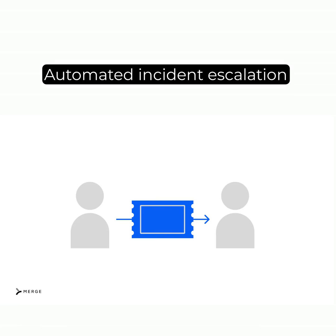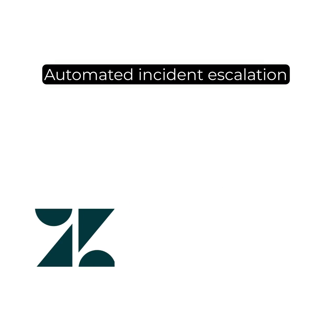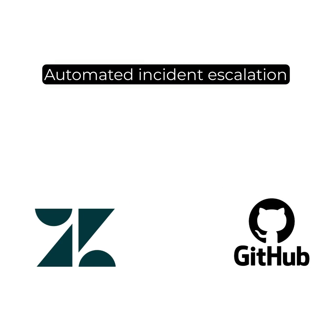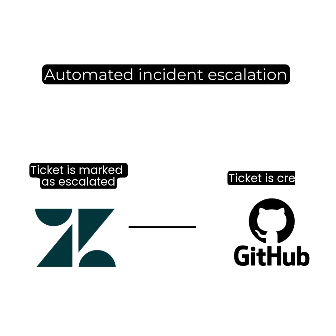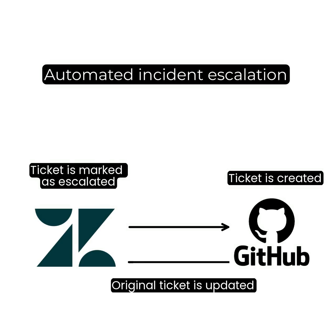Now let's imagine that your customer success managers need to escalate specific issues to engineering quickly and in a way that's easy. To accomplish this, you can integrate the customer-facing employee's ticketing tool, say Zendesk, with engineering's, say GitHub, and then build a workflow where once a ticket is marked as escalated in Zendesk, it's automatically created in GitHub. You can also build a sync to work bi-directionally, so your customer-facing personnel can learn the status of any ticket without having to ask their colleagues for an update.